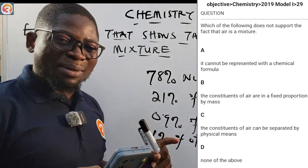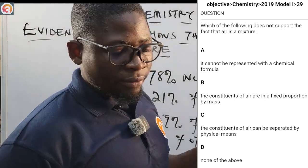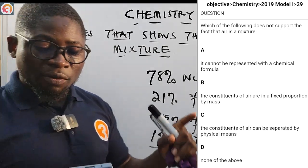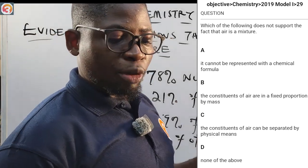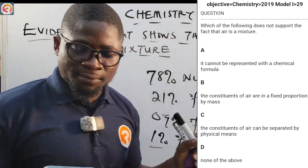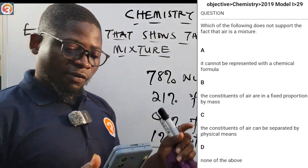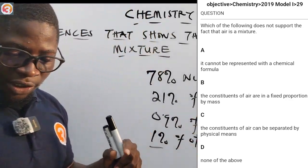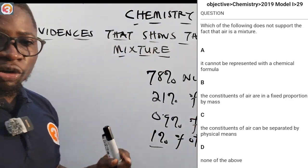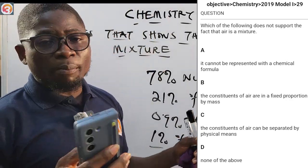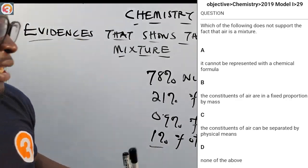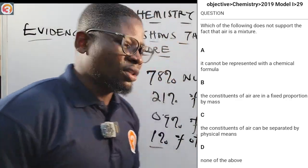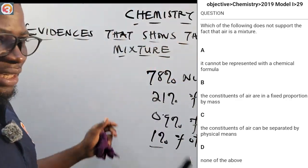Option A: it cannot be represented with a chemical formula. Option B: the constituents of air are in a fixed proportion by mass. Option C: the constituents of air can be separated by physical means. Option D: none of the above. We'll come back to this question at the end of class.